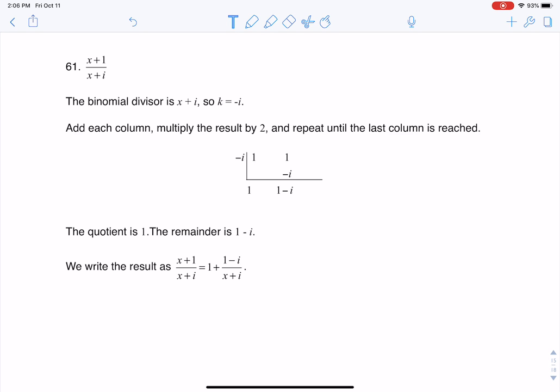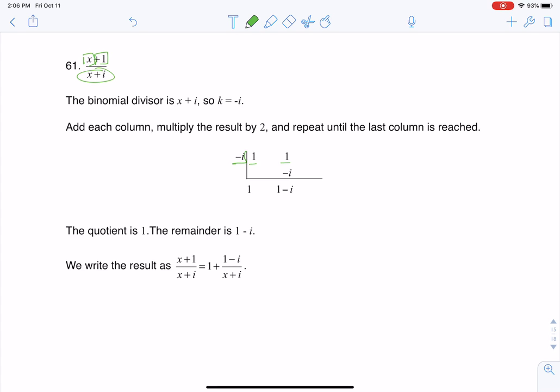In this case, same ideas apply as always. So since my divisor is x plus i, I'm going to put minus i right here, and since my coefficients up top are one and one, that's why you see the one and one here.